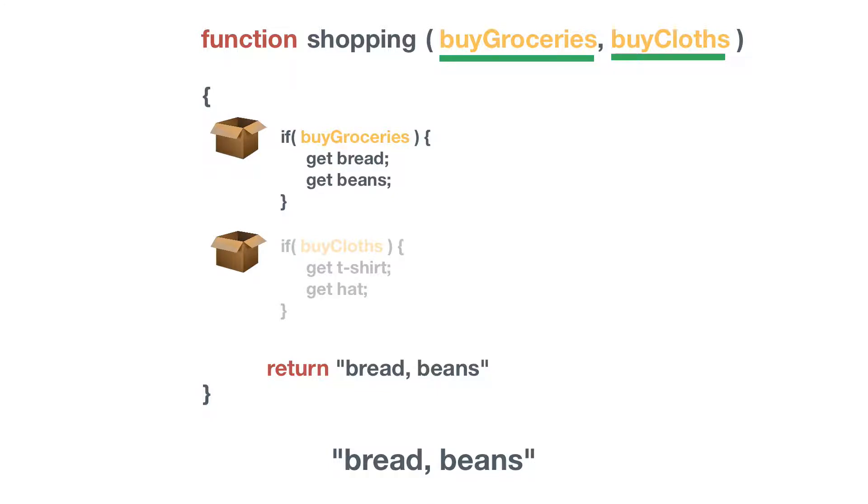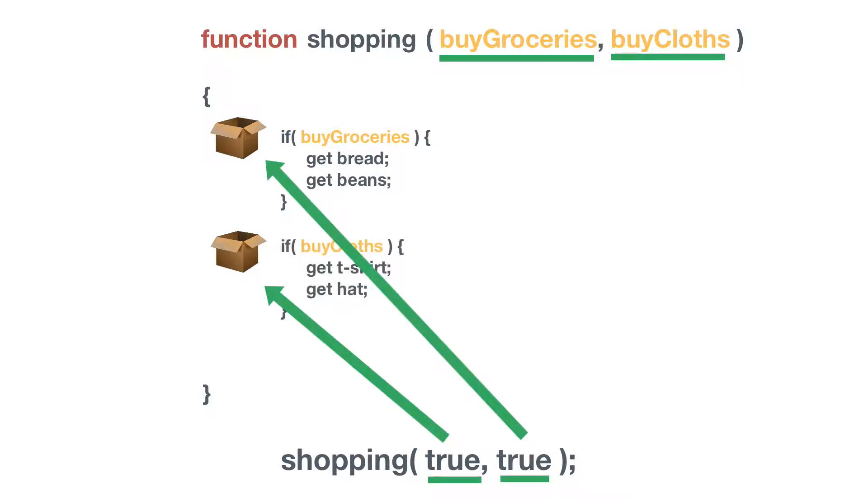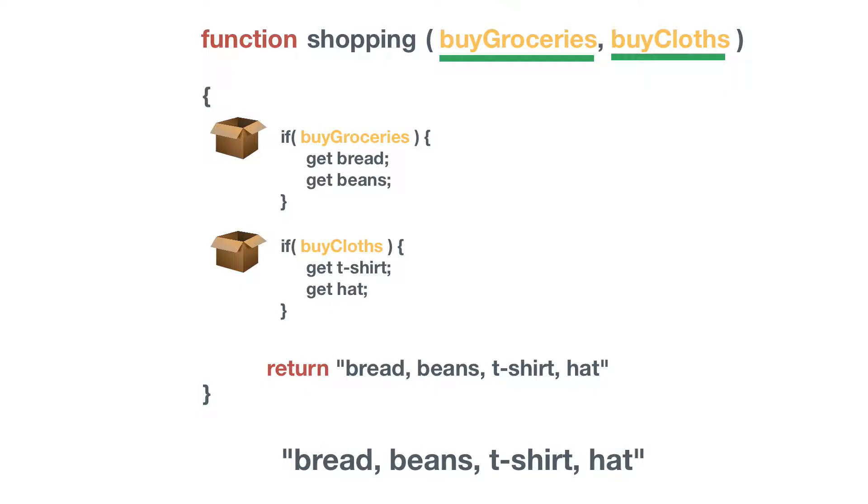That's nice and easy. But I can invoke the function again. Again we invoke the function and again we have the parentheses here and in the parentheses we have the arguments and I'm going to say true to both buy groceries and buy clothes. And now I'm going to take my function. They both have true and notice how we get a different return where we have now we buy all groceries and we buy all clothes and now we get a return statement for all of these items that we've purchased and likewise I could say don't buy groceries just buy clothes.